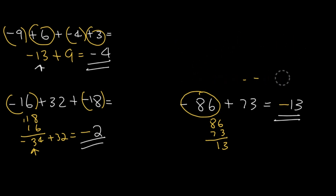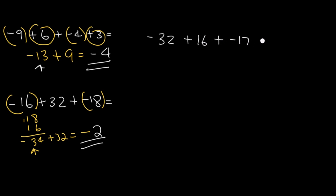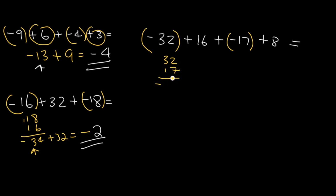Practice makes perfect, so let's keep working on more problems. Try this problem. By now, you should be pretty good at adding integers. What's the first thing you should do in this problem? The first thing you should do is group the negatives and add them. Negative 32 plus negative 17 is negative 49.